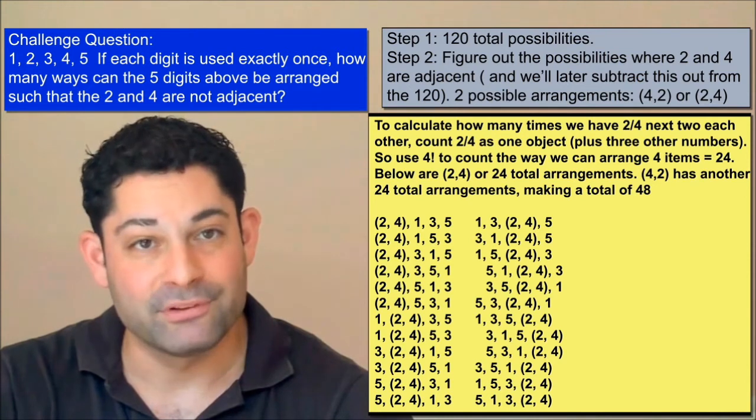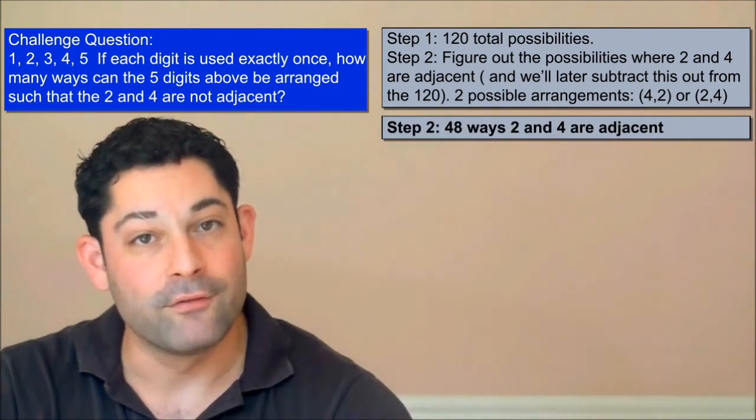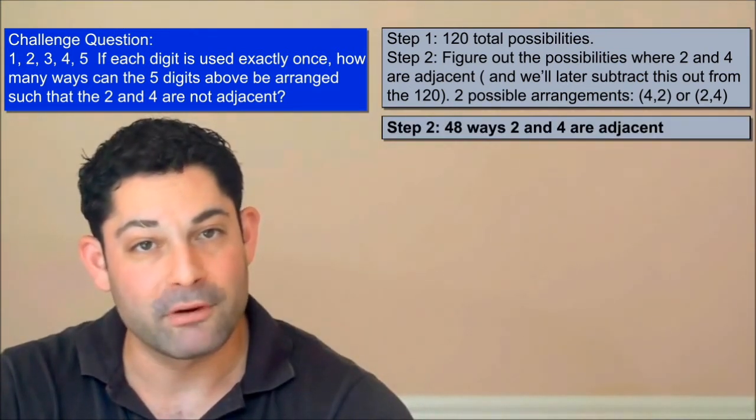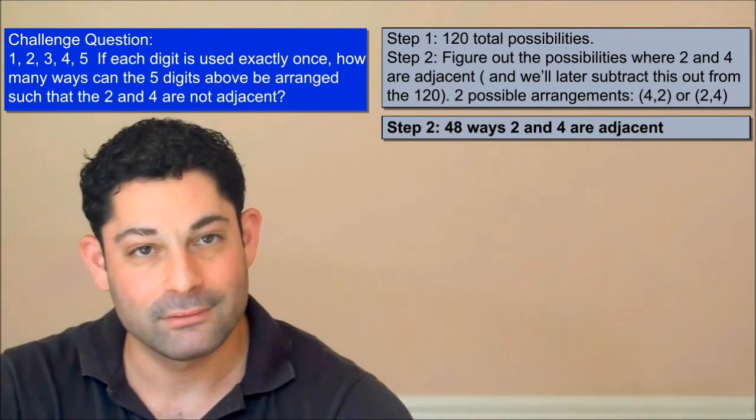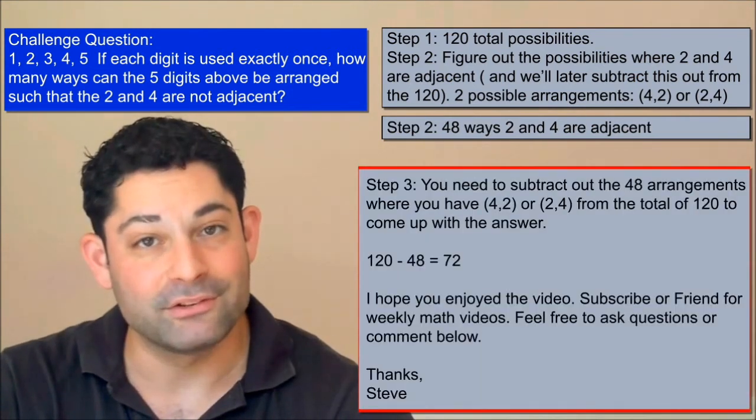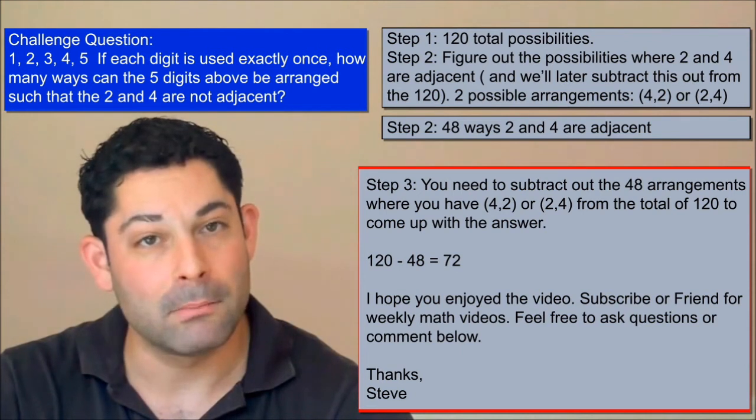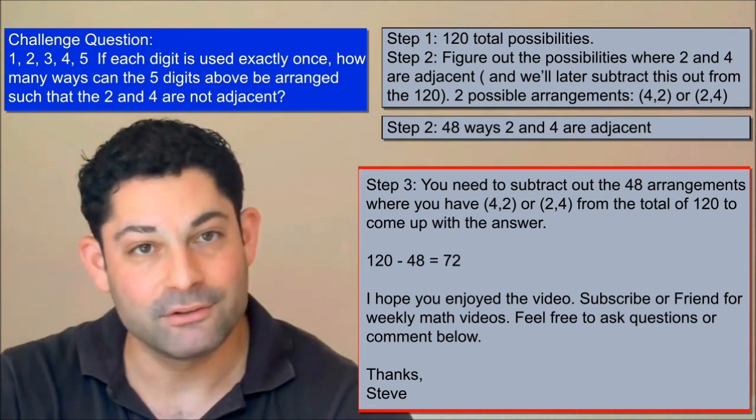In our third and final step, we simply subtract 48 from the 120 total number of possible arrangements. So the answer to this week's challenge question is 120 minus 48, or 72.